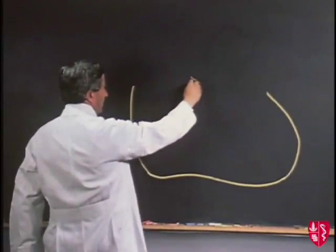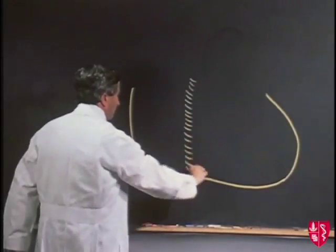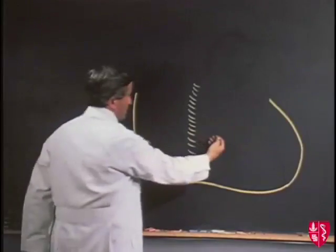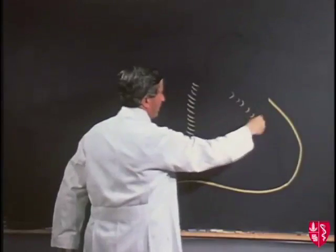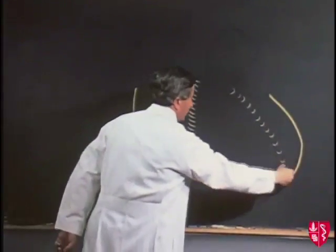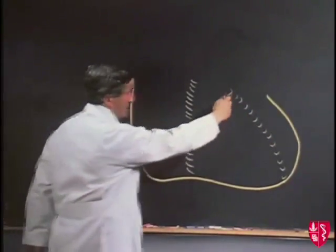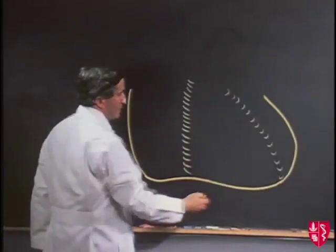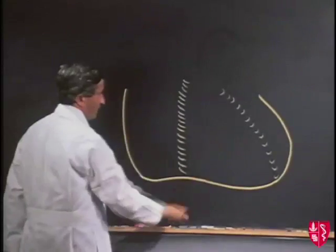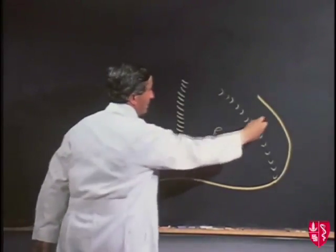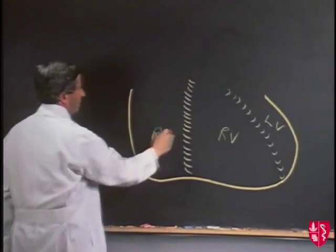I'll indicate here the position of the groove which exists between the right atrium on this side and the anterior surface of the right ventricle. And I'll indicate the groove here coming down towards the apex of the heart, and this groove indicates the position of the anterior margin of the ventricular septum, with the left ventricle on this side and the right ventricle here. So this is right ventricle, this is left ventricle, and this is the right atrium.